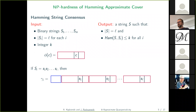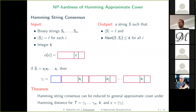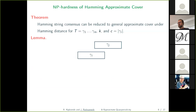We prepend each transformed string with a short special block to obtain a string γ_i. Then we produce a text which is the concatenation of those γ_i's. We show that the Hamming string consensus problem reduces to the general approximate cover problem under Hamming distance for exactly this string. The integer k stays the same, and the cover length we seek is exactly the length of γ_i. I haven't given you the exact morphism forms here — you can check those in the paper.